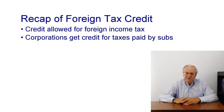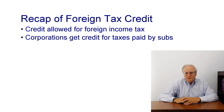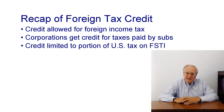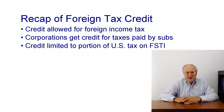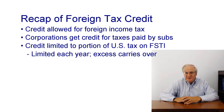Taxes paid by a subsidiary of a U.S. corporation are allowed to the corporation as a credit. This deemed paid credit happens only when the corporation recognizes dividend or subpart F income from the subsidiary. The foreign tax credit is limited to the portion of U.S. tax caused by foreign source net taxable income. A separate limitation is applied each year, and any excess credits over the limit may be carried back one year and forward 10 years, subject again to the limitation in the target year.